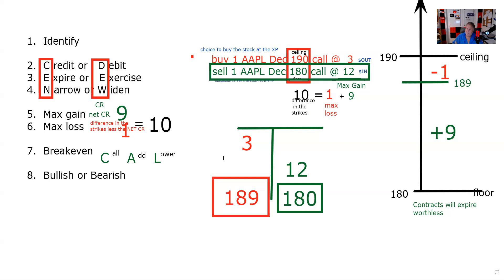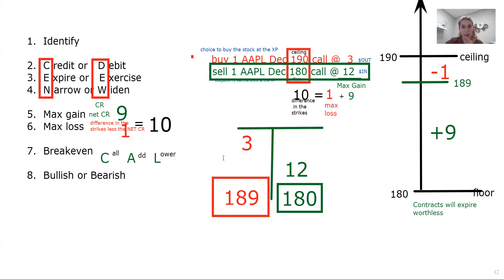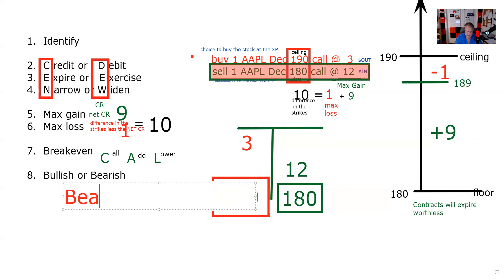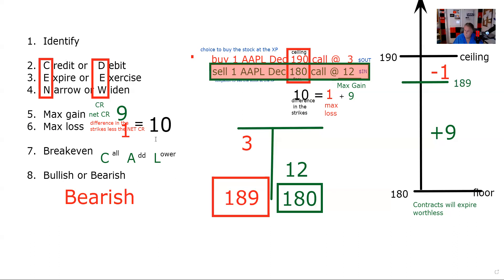The memory aid for puts is: Put Subtract from the Higher — call up, put down. The last thing we have to be able to do on a spread is determine: is it bullish or bearish? The larger premium dominates the position. Here the larger premium is the short call, so you are a bear — but a smart bear, because you know how to take the money without taking all the risk.